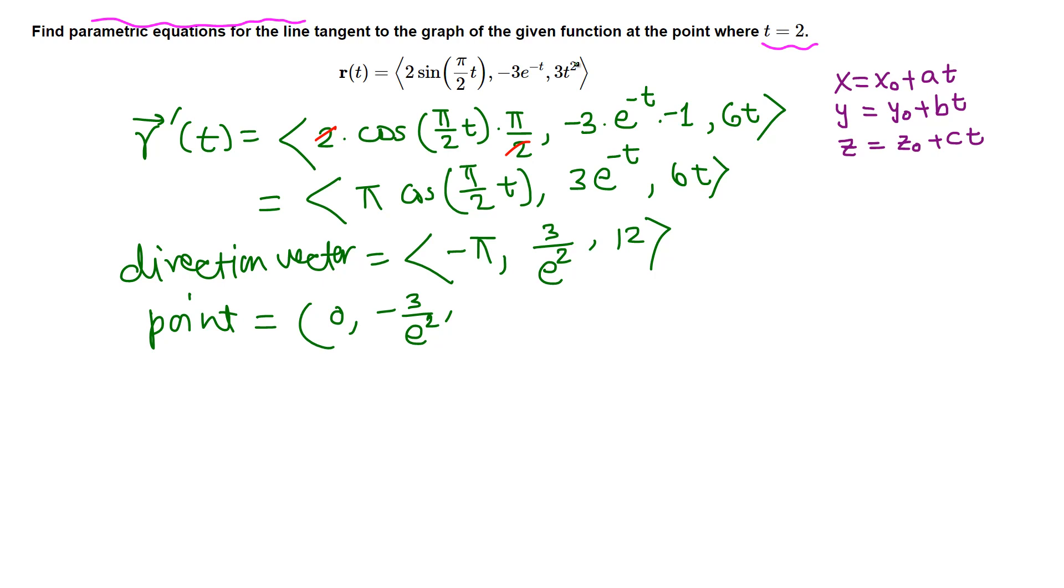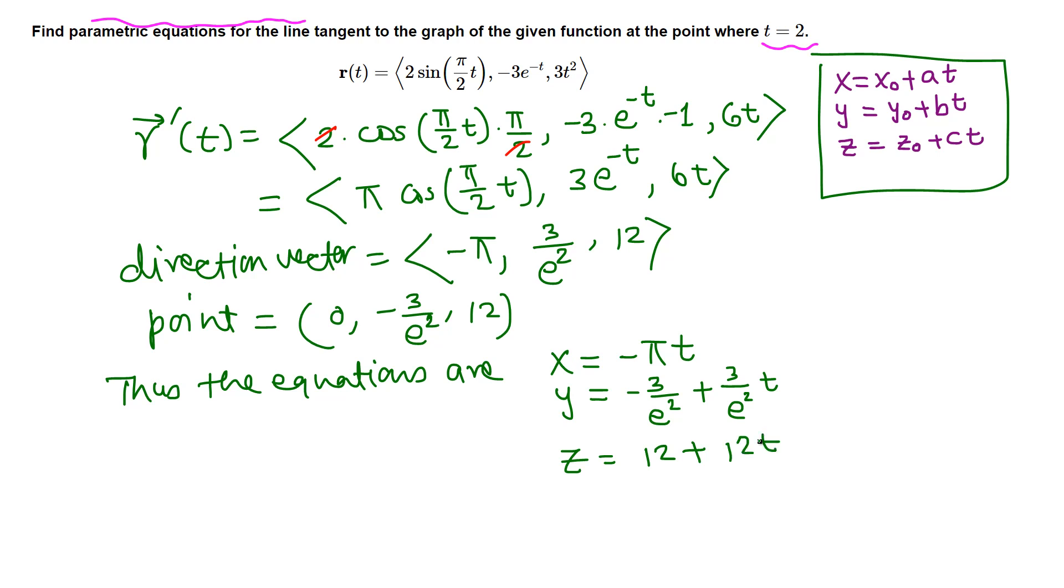Now use this formula and we're done. Thus the equations are: x = x₀, which is 0, plus -πt, so x = -πt. y = y₀ (-3/e²) plus 3/e²·t. And z = z₀, that's 12, plus 12t. Final answer.